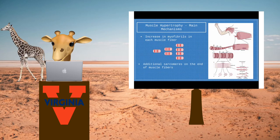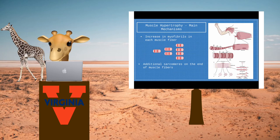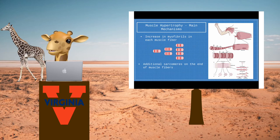We will now go over the main mechanisms of muscle hypertrophy. First is an increase in myofibrils. The rate of muscle contractile protein synthesis is greater than decay, leading to more actin and myosin filaments in the myofibrils.